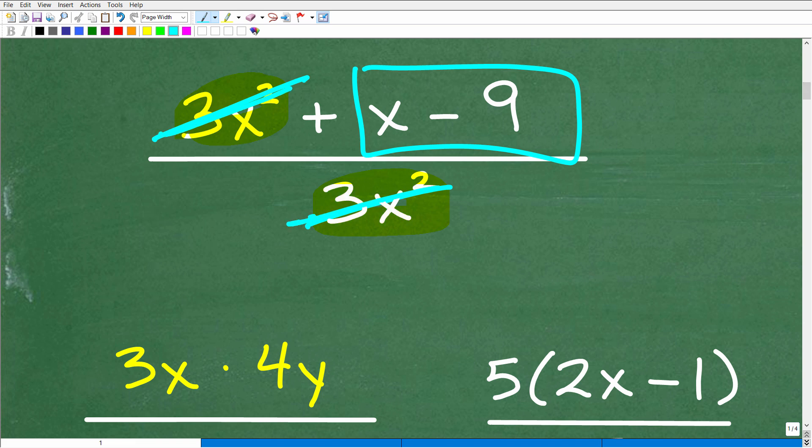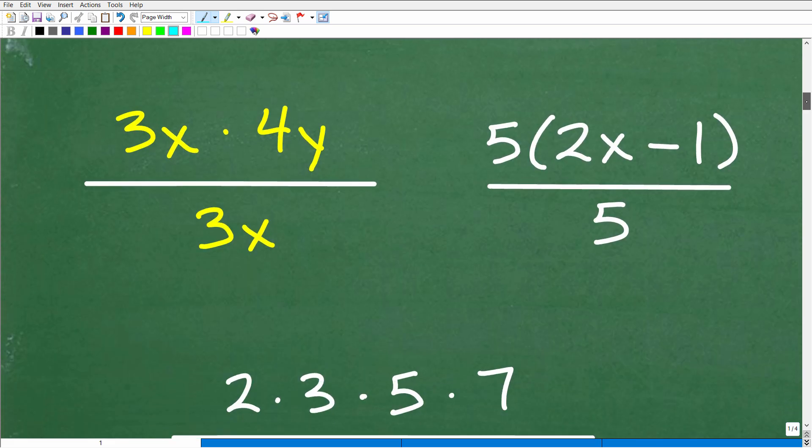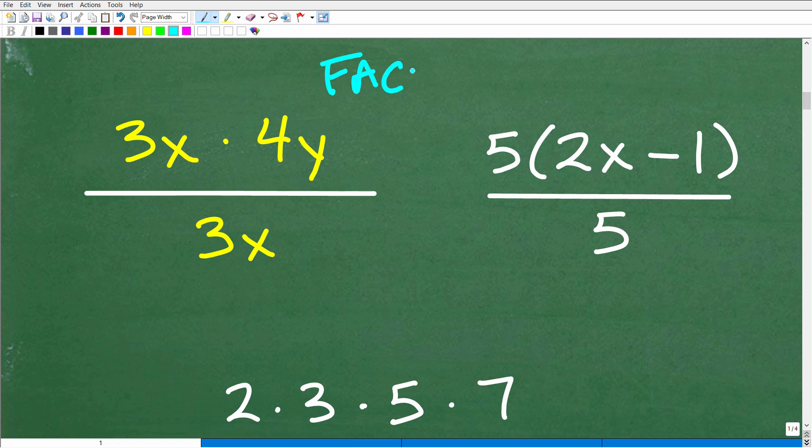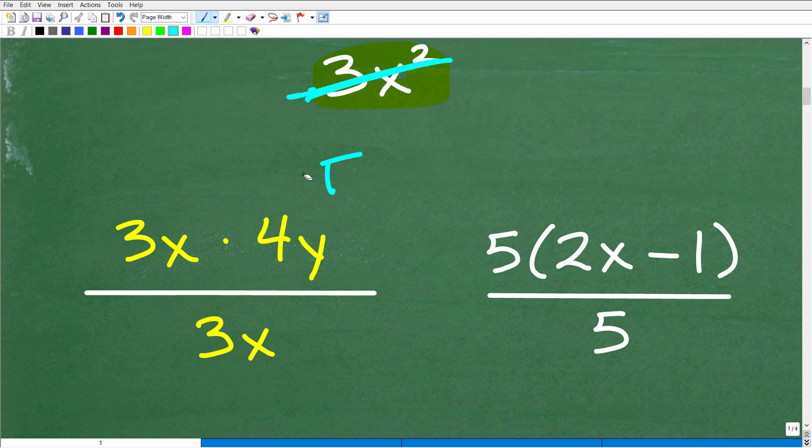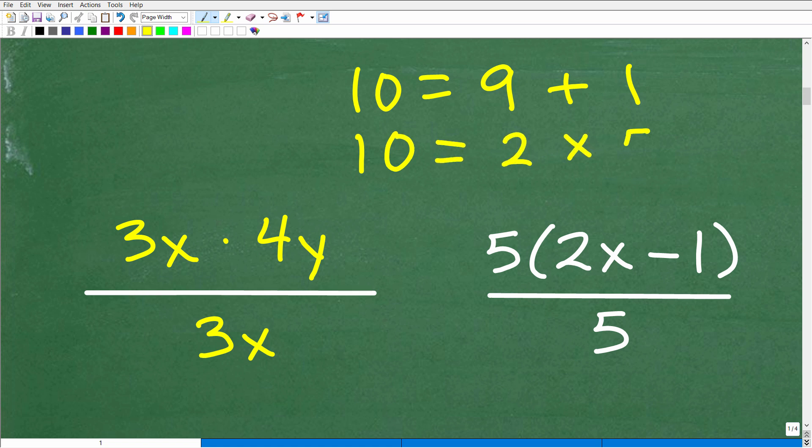When can you cross cancel things in mathematics? You can only cross cancel like factors. Here is what a factor is and what a factor is not. Let's say I have 10. 10 is the same thing as 9 plus 1, but 10 is also equal to 2 times 5. So 2 and 5 are factors of 10 because the product of 2 and 5 is 10.